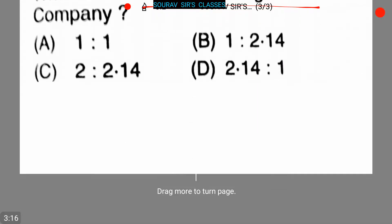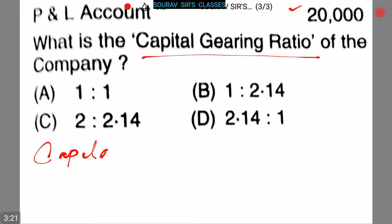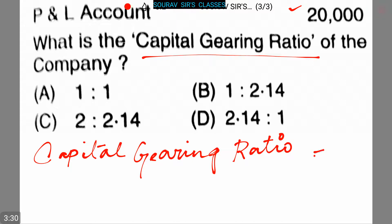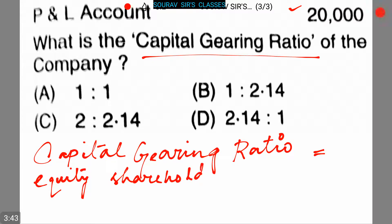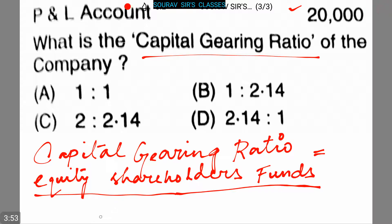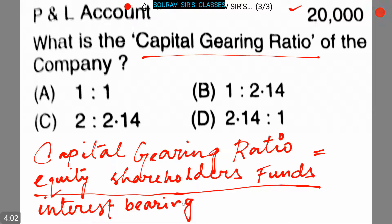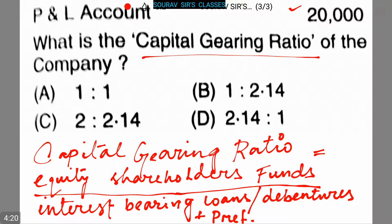Let us proceed to the solution. We know that the capital gearing ratio equals equity shareholders' funds divided by interest-bearing loans, which is equity shareholders' funds divided by debentures plus preference share capital.